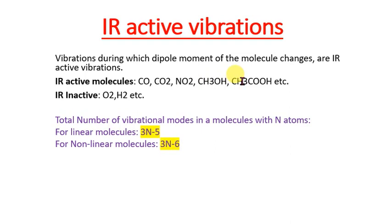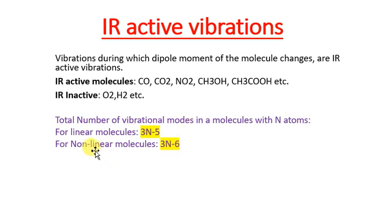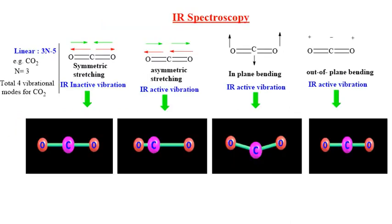These are some examples of IR active molecules, and these are some examples of IR inactive molecules. The total number of vibrational modes in a molecule is given by two formulas. For a linear molecule, total number of vibrational modes is 3N minus 5. For a non-linear molecule, it is 3N minus 6. I will take one example of a linear and one of a non-linear molecule and calculate the vibrations.